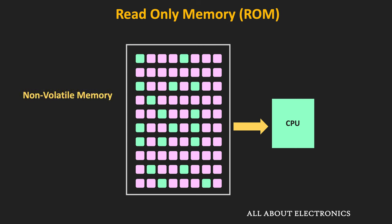Unlike the RAM, this ROM is the non-volatile type of memory, meaning that even if the power goes down, the content of the memory will remain as it is. And that is why it is used in applications where we want to store the data permanently. At the end of the video, we will also see the typical applications of the ROM.